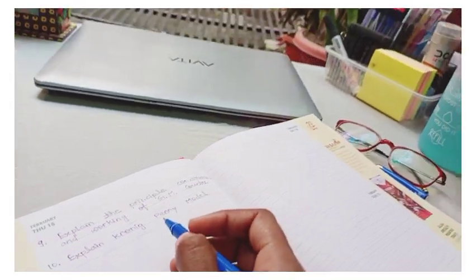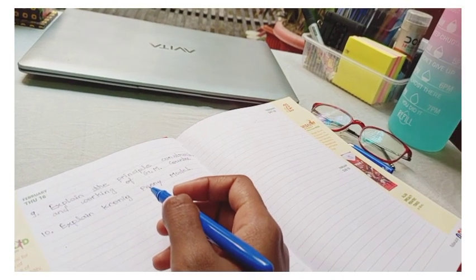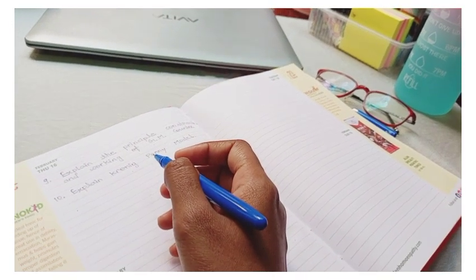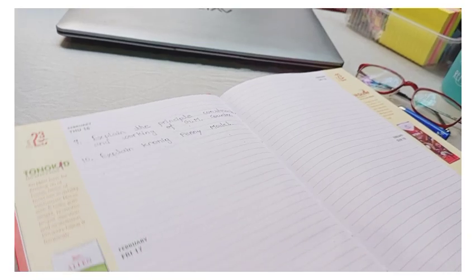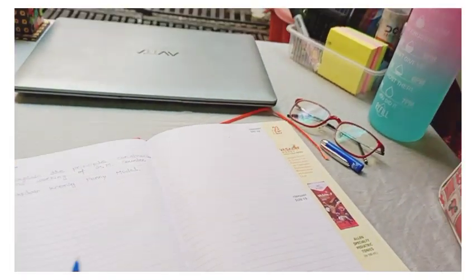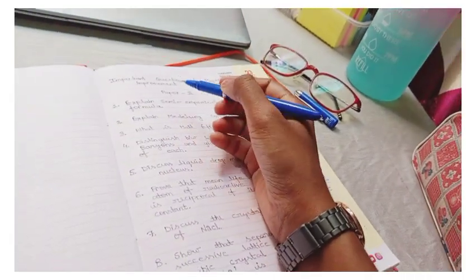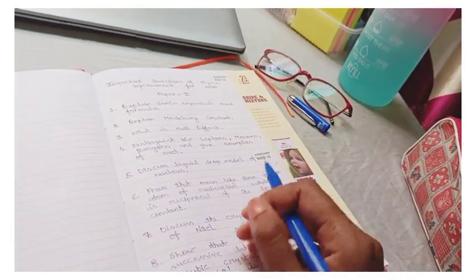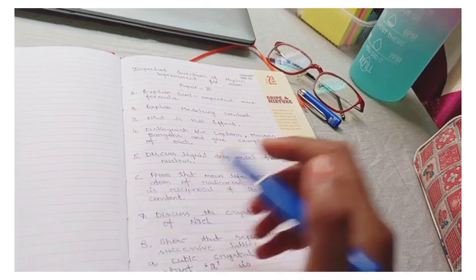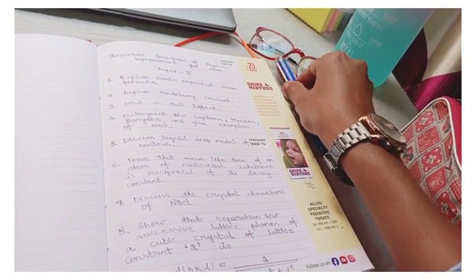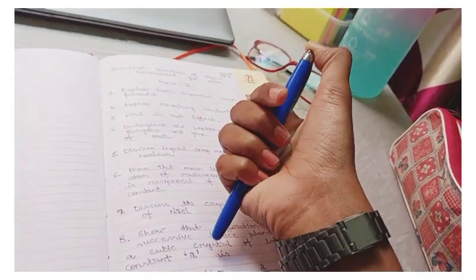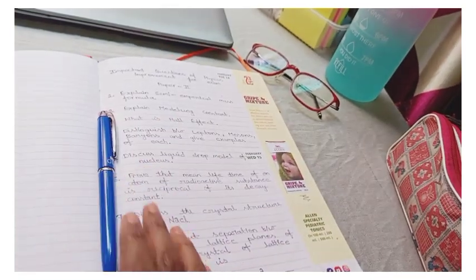Don't forget the Hall effect question. The first is the Hall effect question. The second one is the liquid drop nuclear model. Then the Cronin-Penny model. And the principle of construction and working principle of Geiger-Muller counter. These three questions, don't skip these three questions. This is very important.